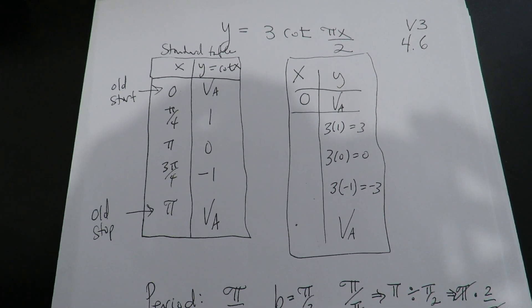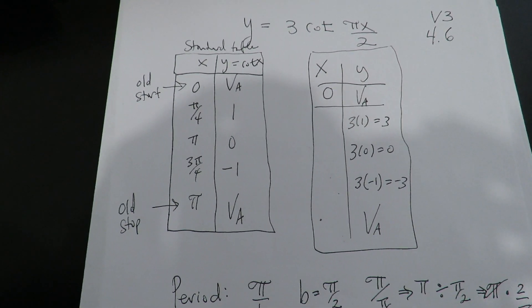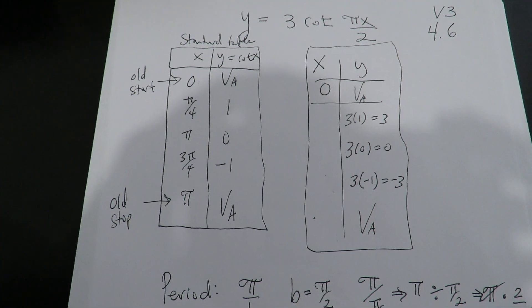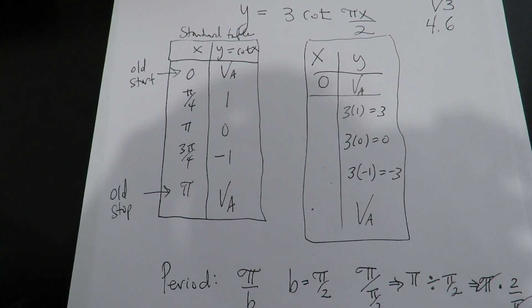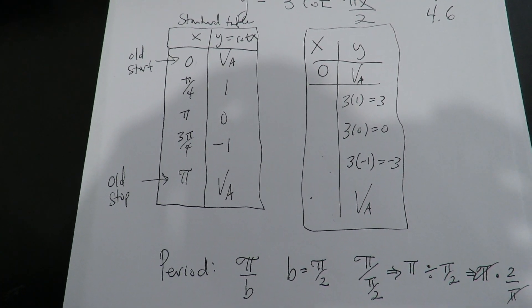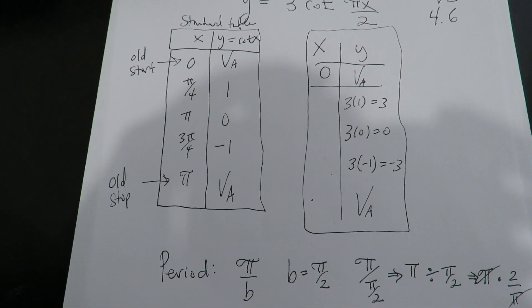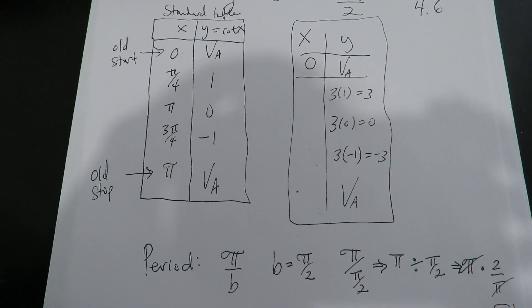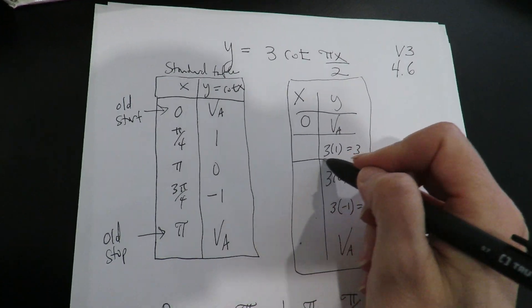You just learn this stuff by practice and experience, but the cotangent function, unlike the tangent function, doesn't behave like an accordion. It just starts at 0. If it's not going to start at 0, that's because you shifted it left to right. But again, it just comes with experience.